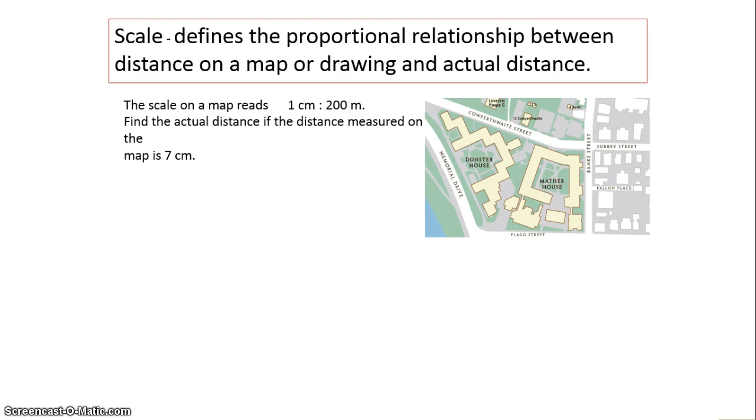First, we have this wonderful map where we see that this beautiful building, the Dunster house, is measuring from here to here as 7 centimeters. Now the map scale is telling me that for every 1 centimeter that is the same as 200 meters. Now I know a lot of us can do a simple multiplication to get our answer, but what I want us to do is to set it up by writing a proportion.